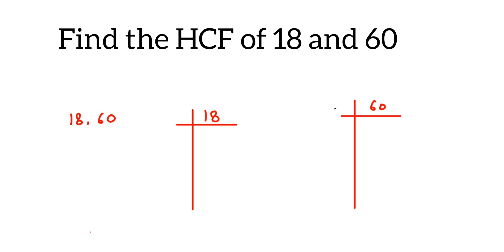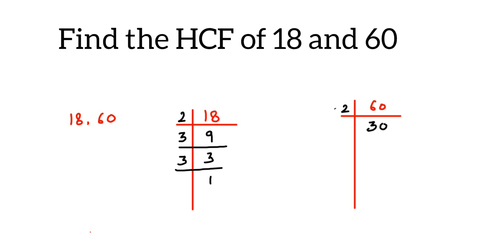18 goes in the 2 table — 2 is a prime number, 2 nines are 18, we get 9. It doesn't go in the 2 table, so take 3: 3 threes are 9, and then 3 ones are 3. Keep going till you get 1.